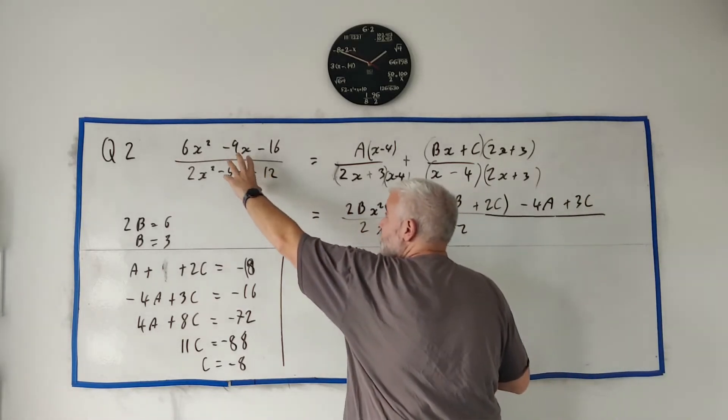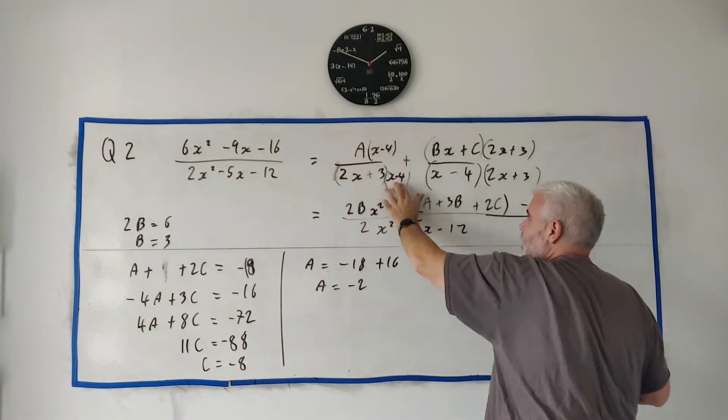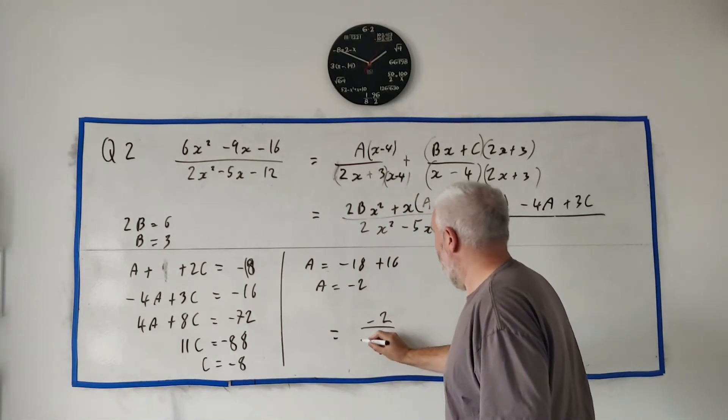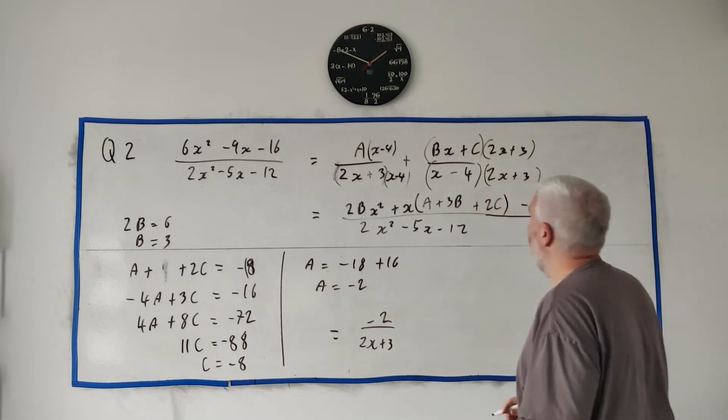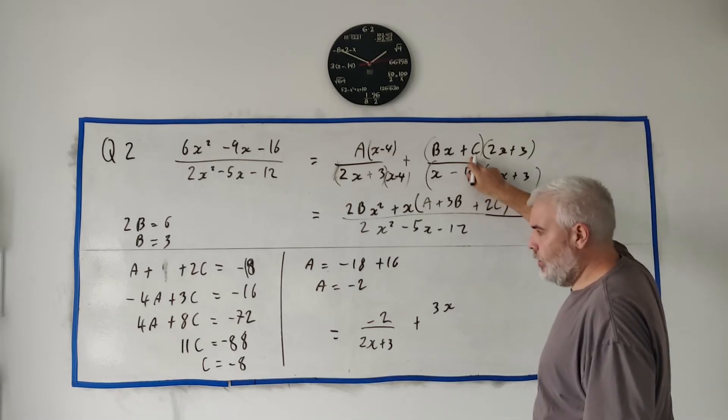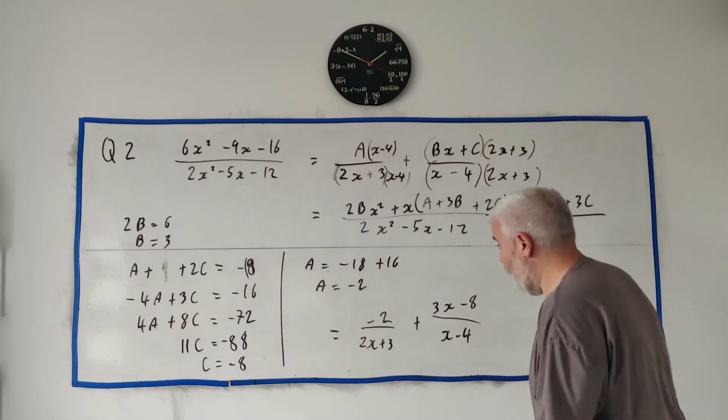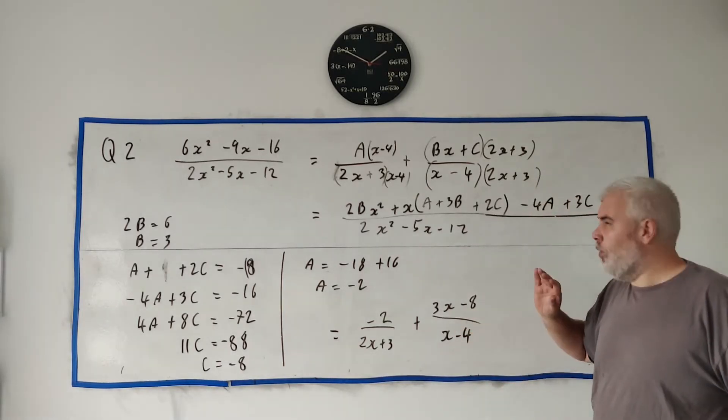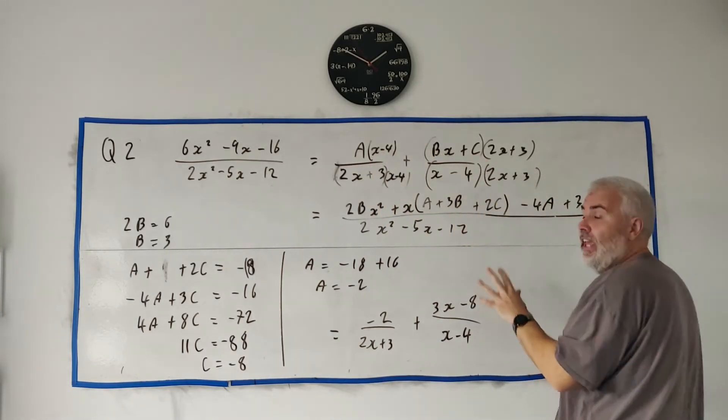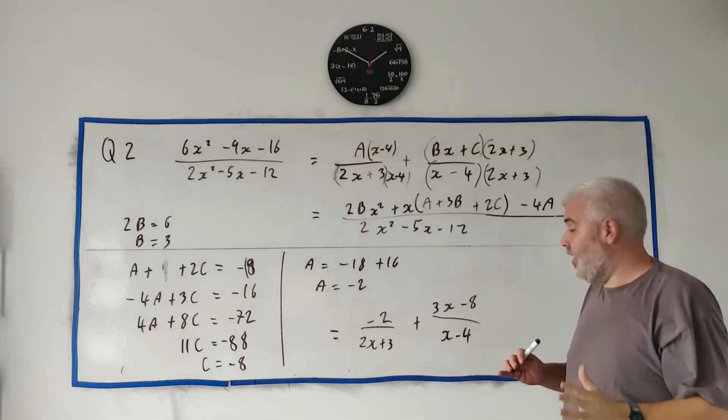So my answer basically is the partial fraction. This is the full answer. This is equal to, oh, I've added these terms in now, is equal to, the left here would be, A is minus 2 over 2X plus 3. And plus B, 3X. C was minus 8 over X minus 4. That would be the full answer. But importantly, it wouldn't be the only answer. Remember, we chose to put an A here and a BX plus C here. If we had chose to put, you know, AX plus B plus C, we would have got completely different numbers.